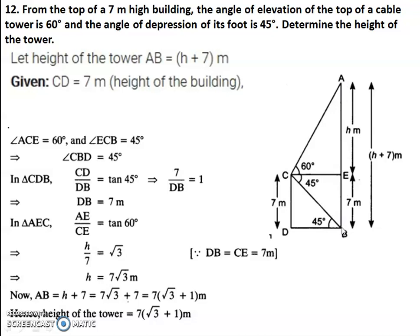We know that BE is 7 meters — the same as CD. BE is 7 meters, and the rest of the height we take as H meters. So what is the total height of the cable tower? It is H plus 7. AB is equal to H plus 7, and the height of the building is 7 meters.